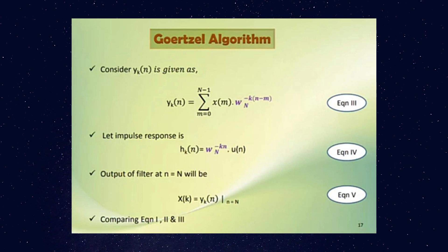So let us consider yₖ(n) is equals to summation m equals 0 to n minus 1, x(m) ωₙ⁻ᵏ⁽ⁿ⁻ᵐ⁾.